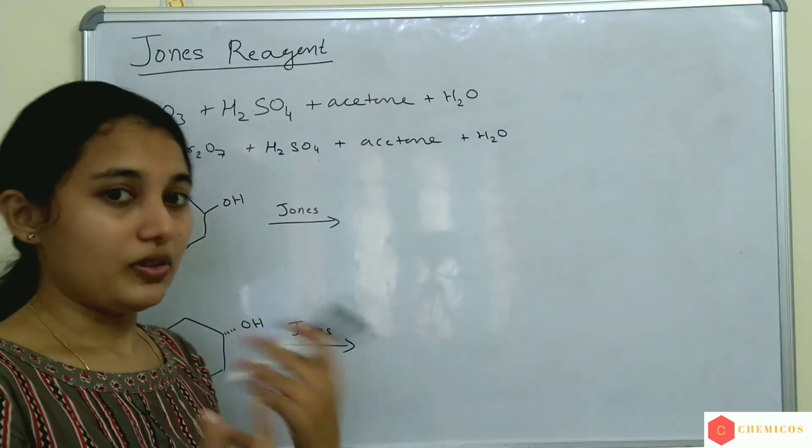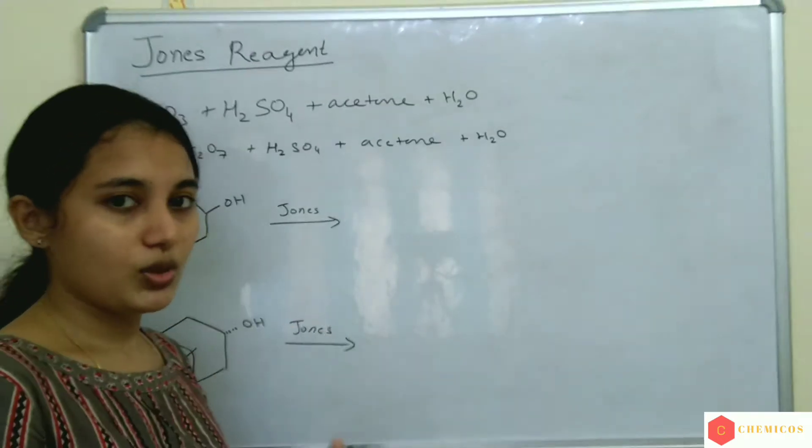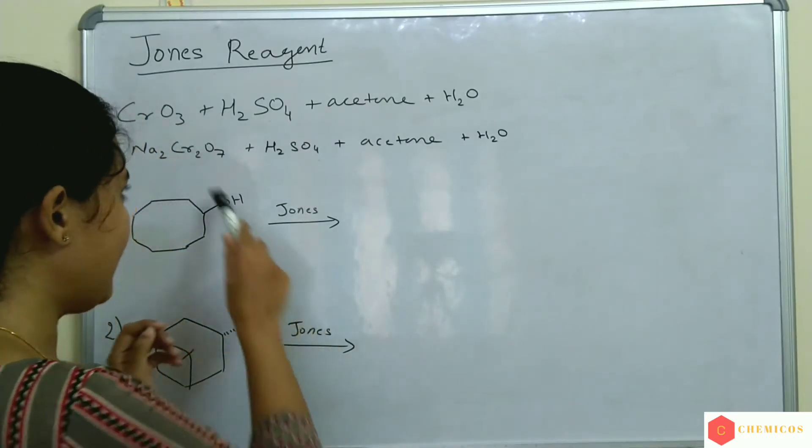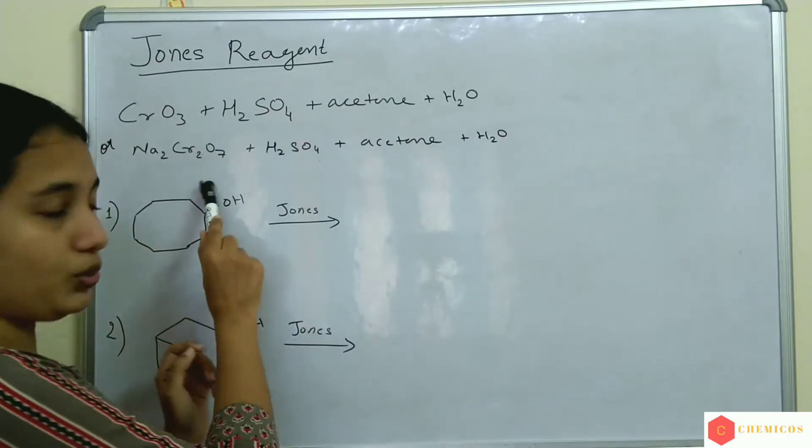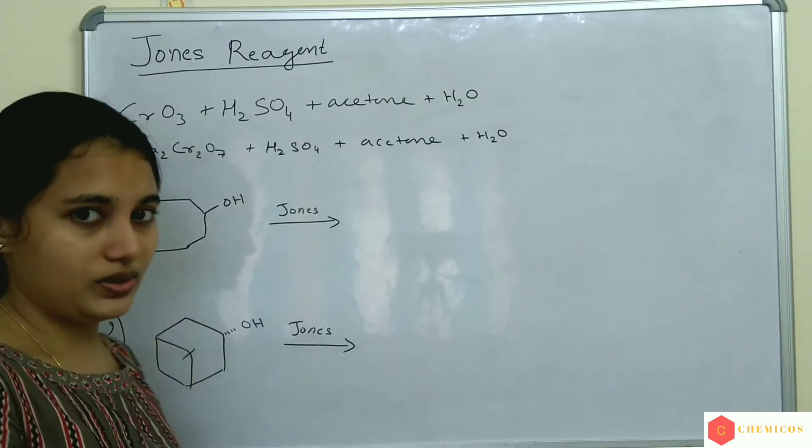CrO3 can be replaced with sodium dichromate, Na2Cr2O7.